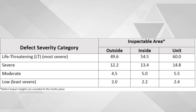Then you would divide the total defect points by how many units you inspected. This is called size adjusting. So we said we had 13 units, therefore we would divide 206.80 by 13, which would give us 15.81. Again, this is called size adjusted defect points.